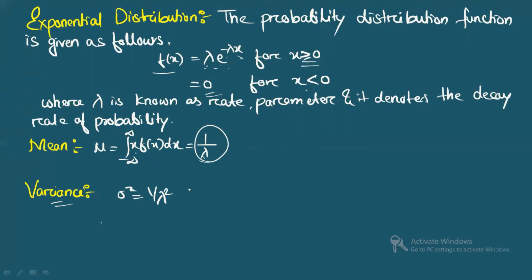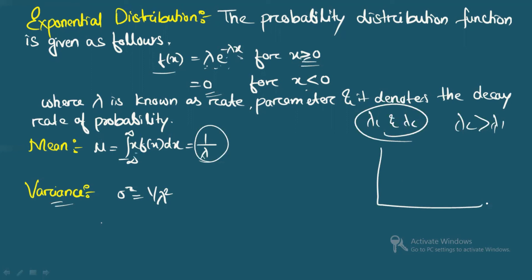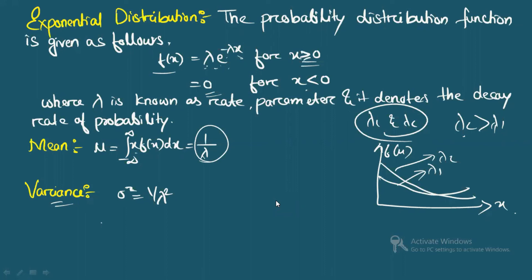If you have two rate parameters λ₁ and λ₂ where λ₂ > λ₁, the graph with the higher rate parameter will have a steeper decay. This is just a general outline of exponential distribution — not covered in great depth. That's all for this video, thank you.